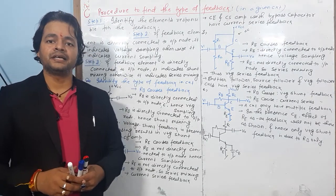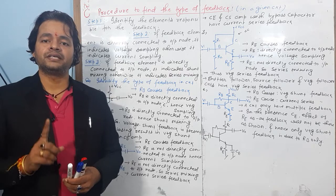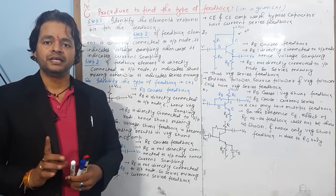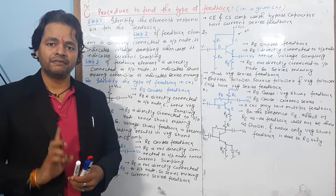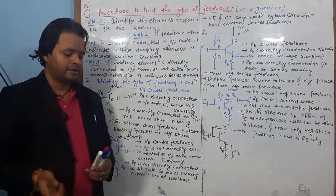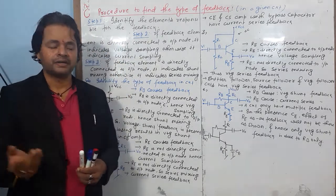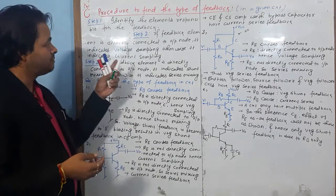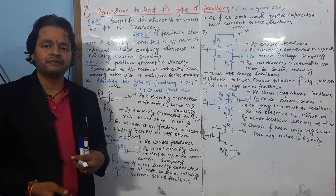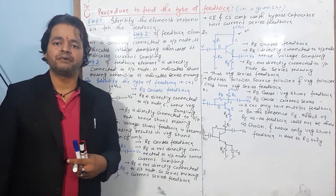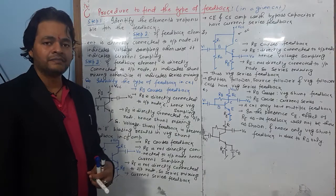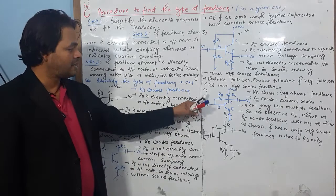In a given circuit, there may be single feedback or multiple feedback. If there is single feedback, then that is called local feedback. If there is multiple feedback, then multiple feedbacks may be present in an amplifier — like in example 4. Examples 1, 2, and 3 have local feedback.